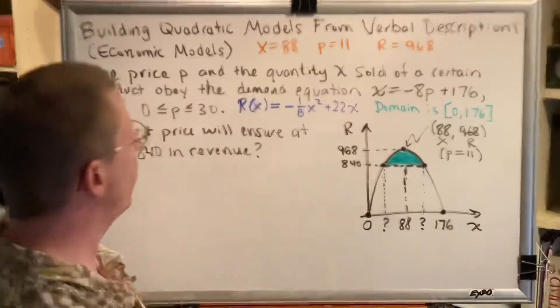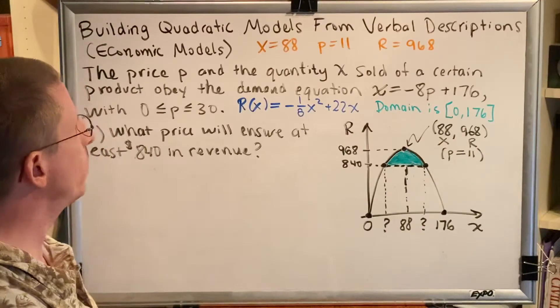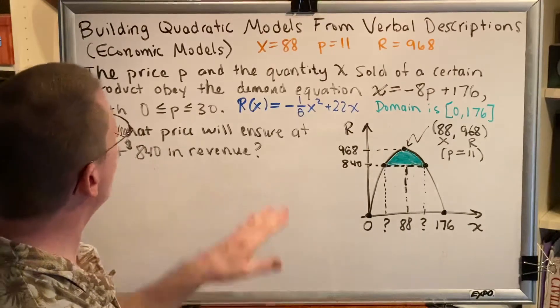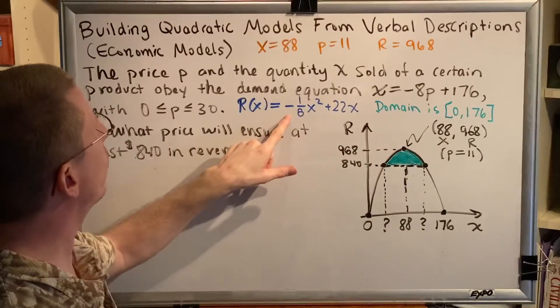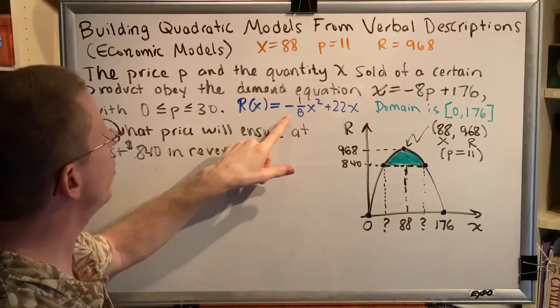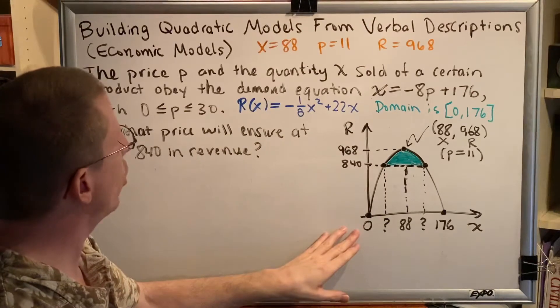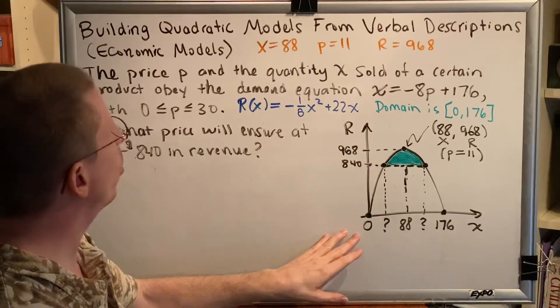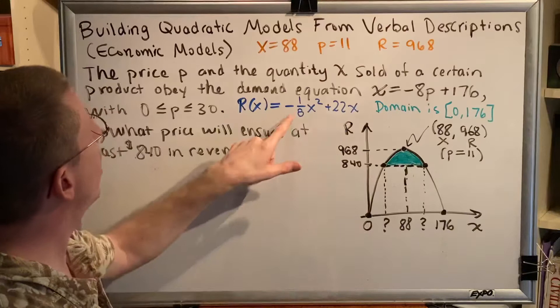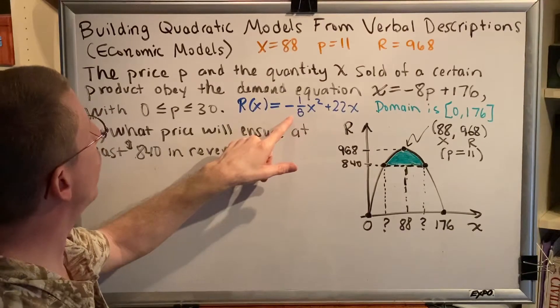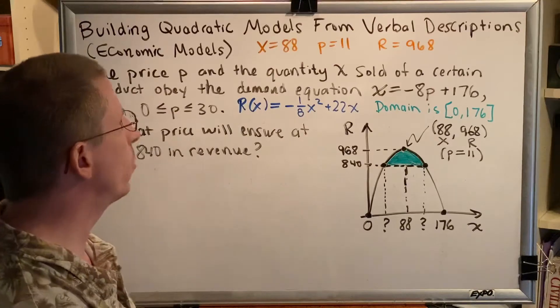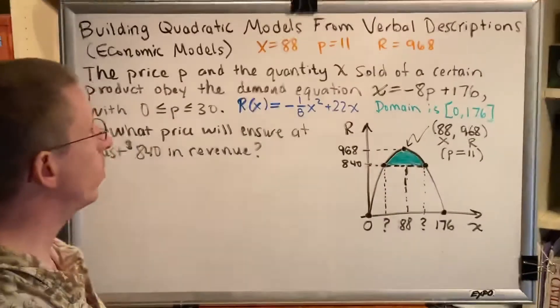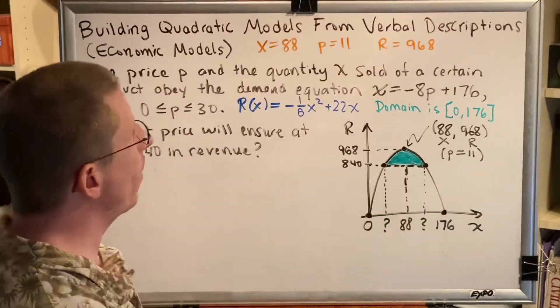Before we begin to answer part F, I would like to share a little bit of information with you about this particular diagram. So what I've done is I've taken the equation R(x) = -1/8x² + 22x and I've created the picture. This is a downward opening parabola.